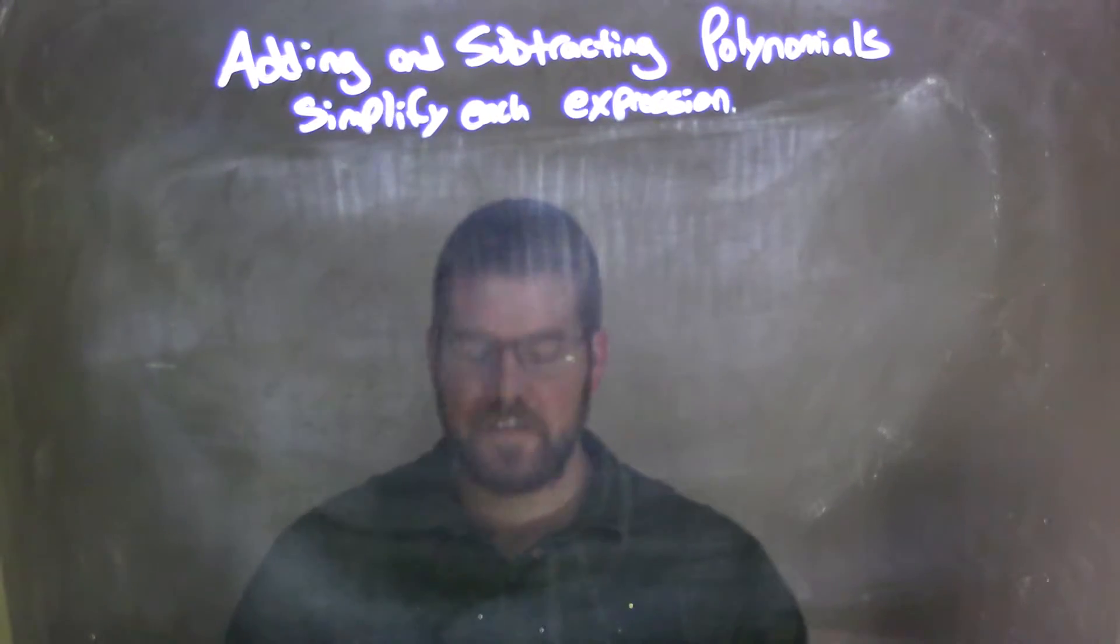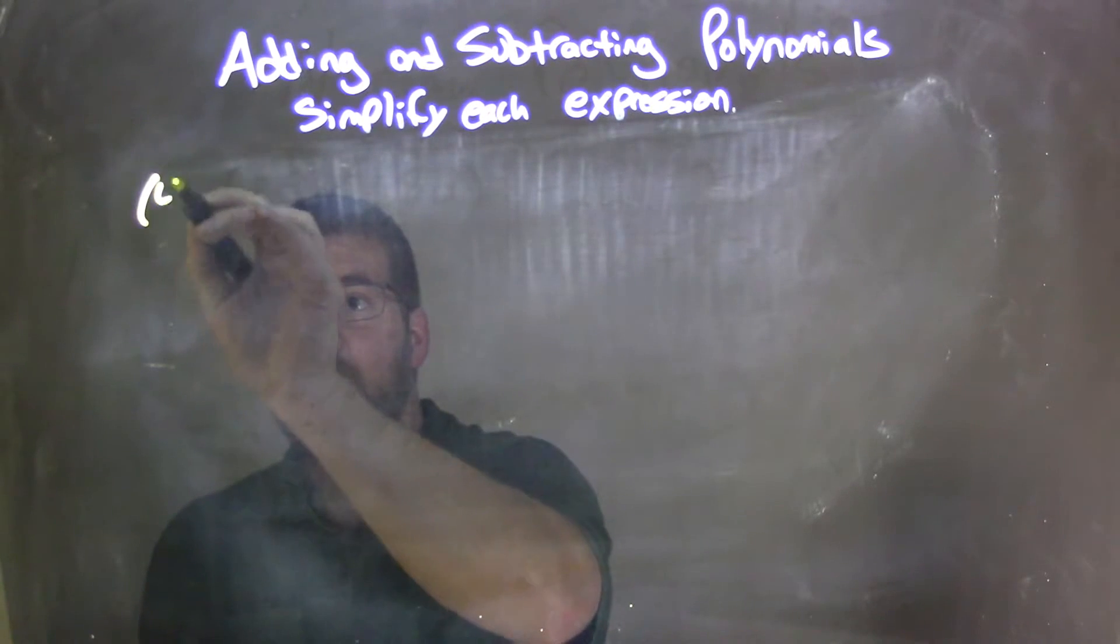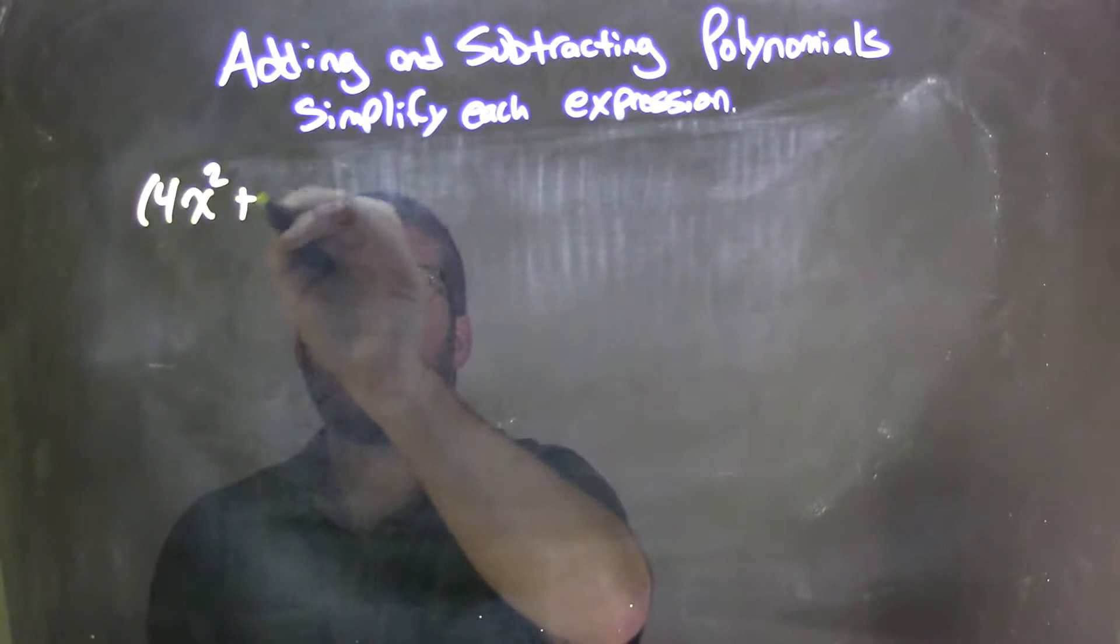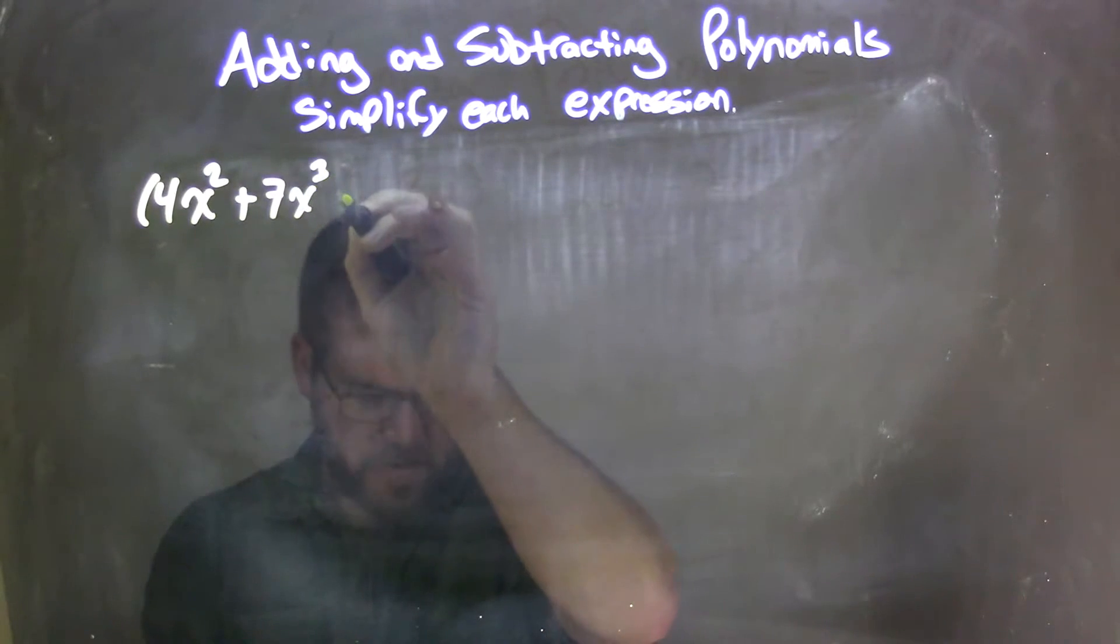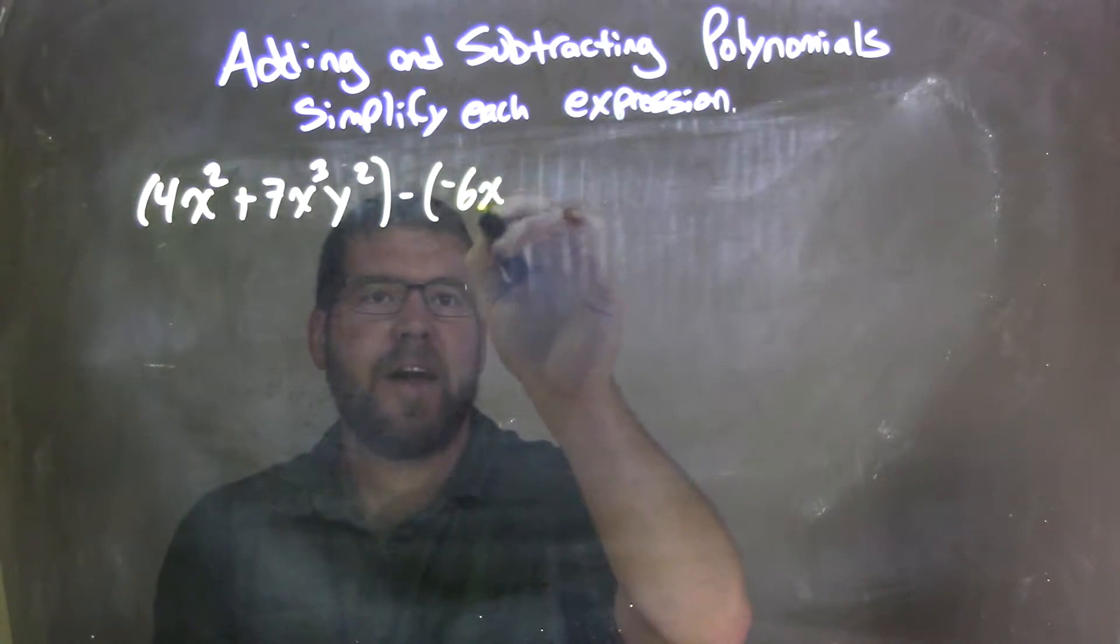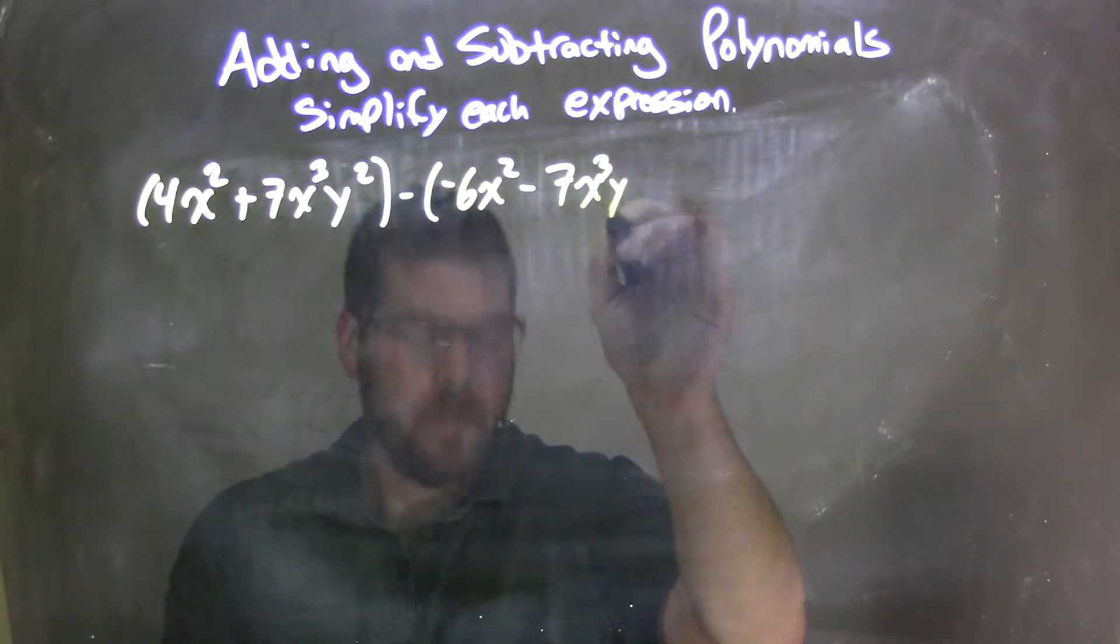If I was given this expression, let me make sure I have enough room here. 4x squared plus 7x to the third y squared, in parentheses, minus negative 6x squared minus 7x to the third y to the second.